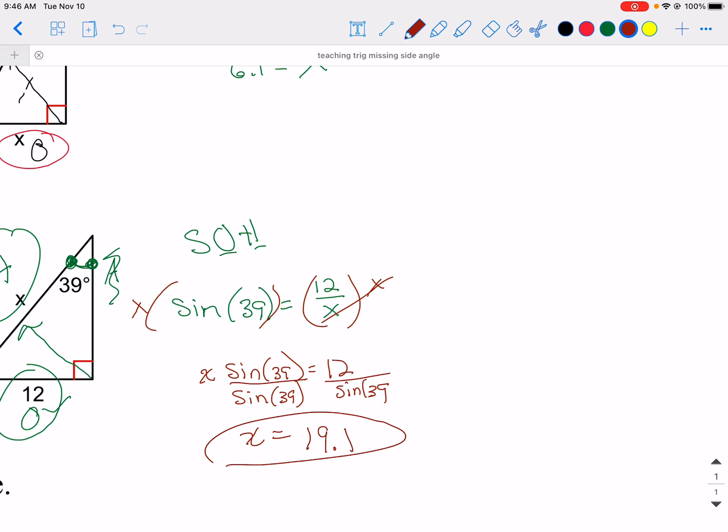So, that is how you find a missing side. Label, label, label your O, A, and H. O, A, and H. Then find which trig function fits what they give you. Which trig function ratio. Sine, cosine, or tangent. And then just fill in the blanks.